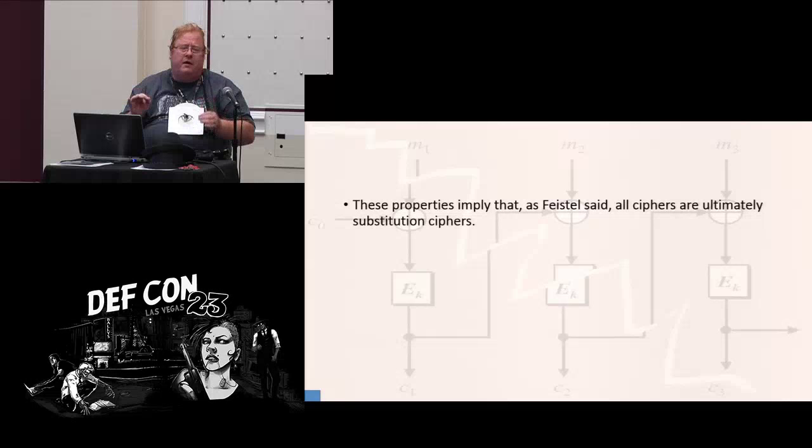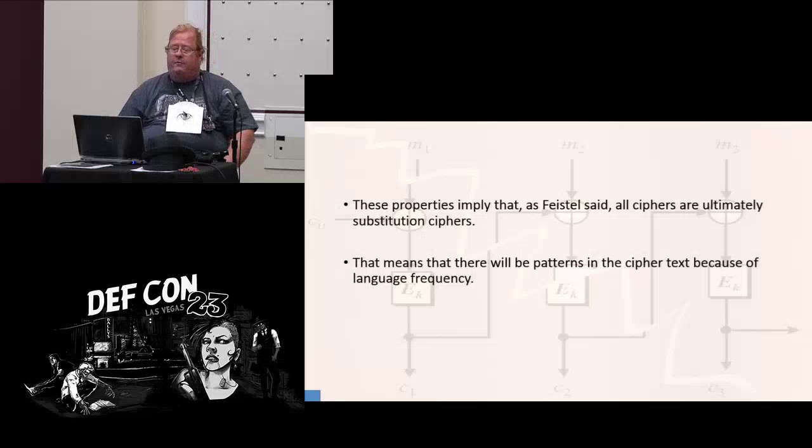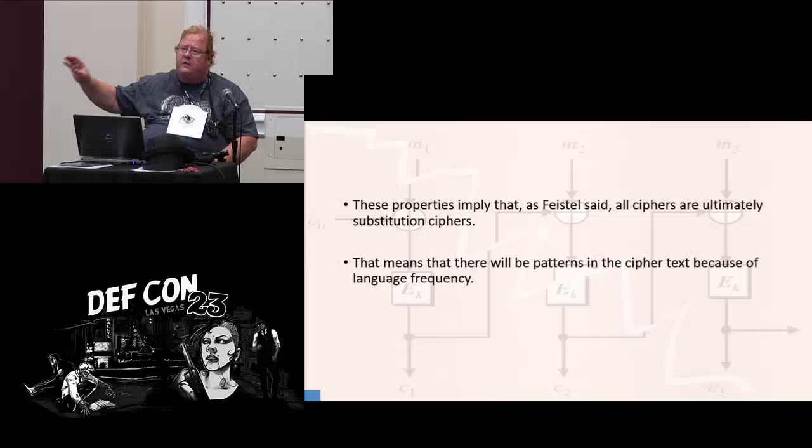As Feistel says, all ciphers are ultimately substitution ciphers. You all knew that, right? Permutations are even substitution ciphers if you do it right. Now, Feistel said this back in 73, and people forget this. Their focus on things seems to be completely wrong. They forget that when you're encrypting, you're trying to hide it. But when you're decrypting, what is the goal of decryption?